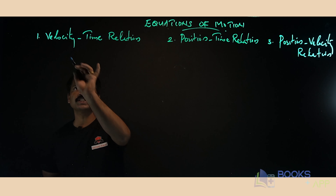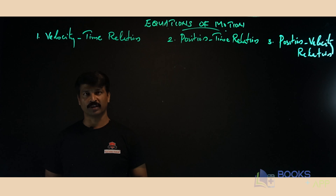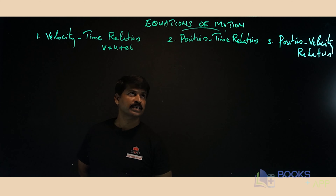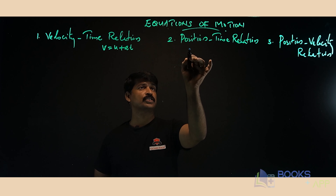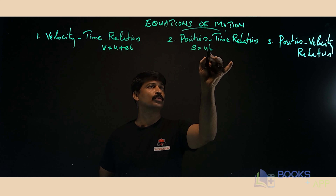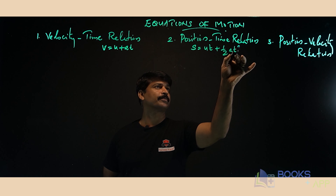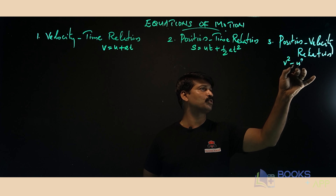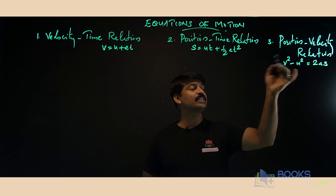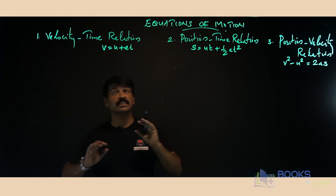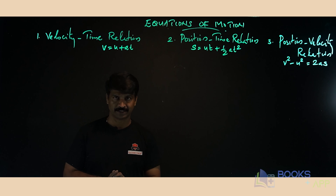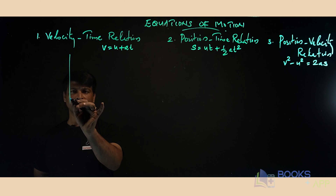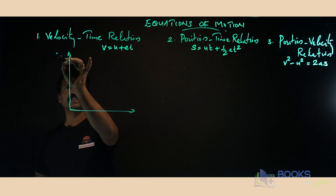Now we will derive equations of motion by graphical method. There are three equations of motion. The first one is the velocity-time relation: v = u + at. The second one is the position-time relation: s = ut + ½at². The third one is the position-velocity relation: v² - u² = 2as. We are going to derive these three equations of motion by graphical method, by drawing a velocity-time graph.